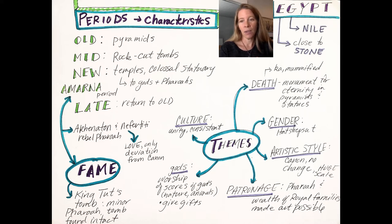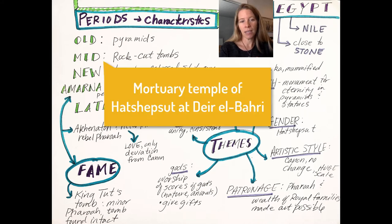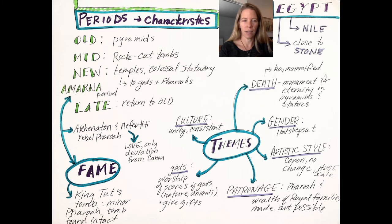In the Middle Kingdom we see rock-cut tombs — like the Temple of Hatshepsut, built into the side of cliffs.